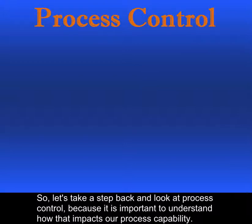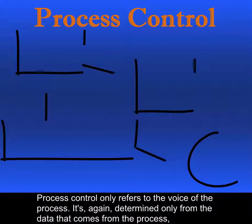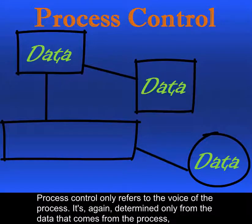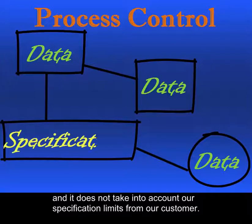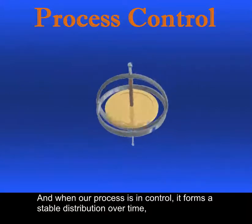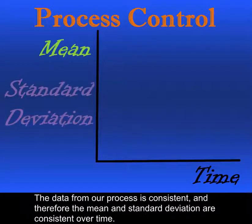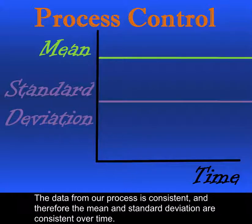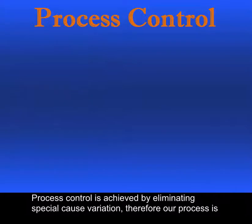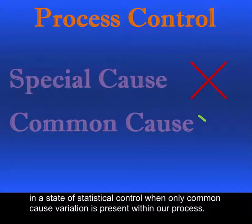Let's take a step back and look at process control because it's important to understand how that impacts our process capability. Process control only refers to the voice of the process — it is determined only from the data that comes from the process and does not take into account our specification limits from our customer. When our process is in control, it forms a stable distribution over time, meaning our mean and standard deviation are not shifting. Process control is achieved by eliminating special cause variation; therefore, our process is in a state of statistical control when only common cause variation is present.